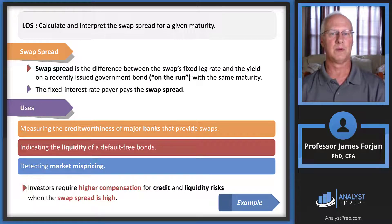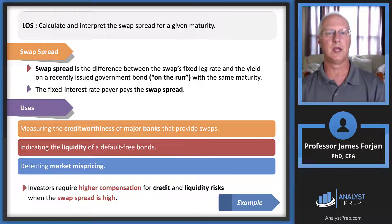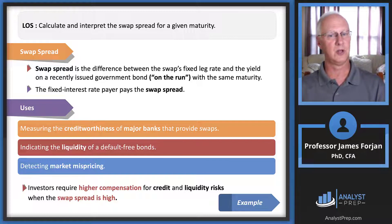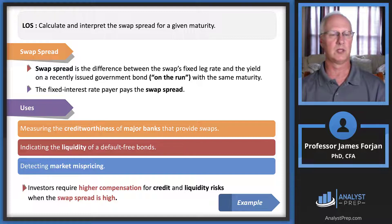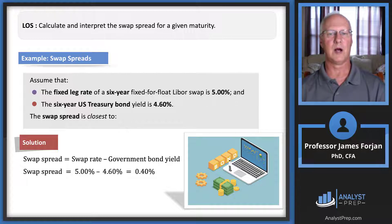The swap spread is simply the difference between the swap's fixed rate (the swap rate) and the yield to maturity on a government bond of the same maturity, using on-the-run issues when possible. The fixed interest rate payer pays the swap spread. It is used to measure credit worthiness of major banks, indicate the liquidity of default-free bonds, and detect market mispricing. In our example, 5% minus 4.6% gives a swap spread of 0.4%.